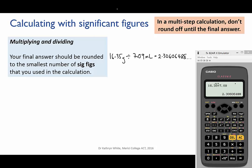But I know that my final answer can't possibly be that accurate. I go back to the values that I used in the calculation. 16.35 has four sig figs and 7.09 has three sig figs. Of those, the three sig figs is the lower, so that is the number of sig figs that I should express my final answer to. So I round that number to 2.31 grams per mil.